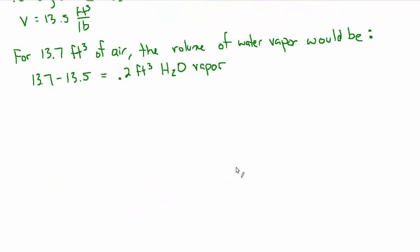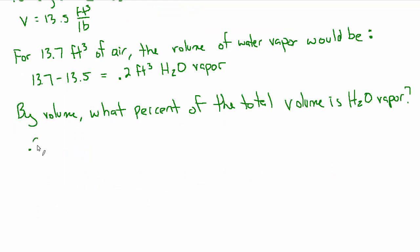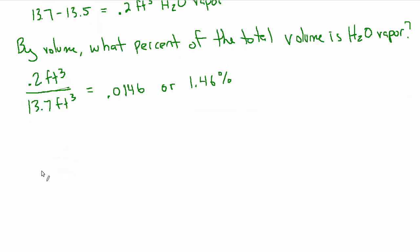So let's ask another question. What percentage of the total volume is water vapor? Well, we have this 0.2 cubic feet of water vapor, and we want to know what percent that is of the total volume, which is 13.7 cubic feet. So that works out to 0.0146. That would be the volume fraction. Or you can say that that's 1.46% of the total volume. So now how does this tie back to partial pressure? We want to ultimately find the partial pressure of water vapor.